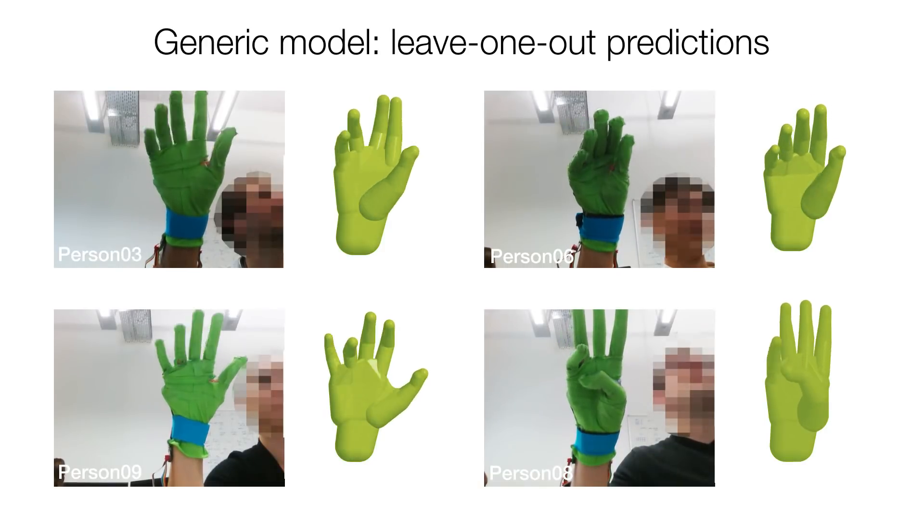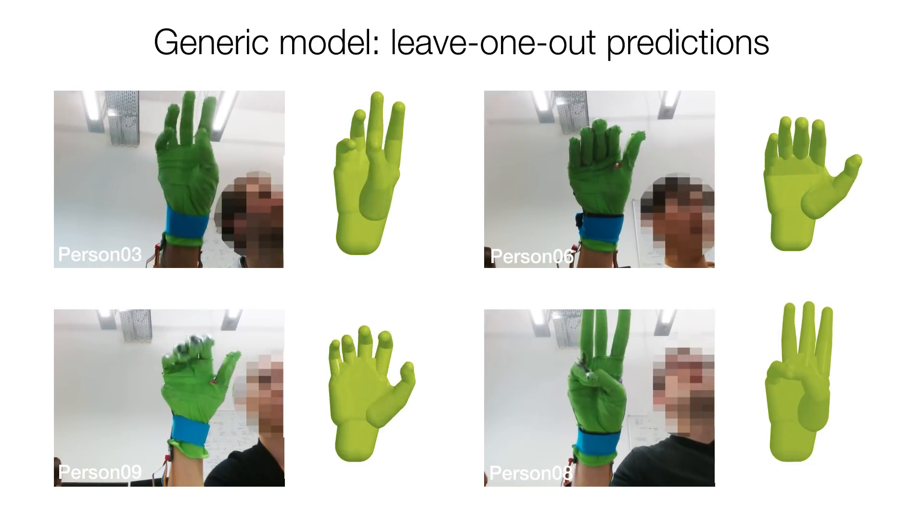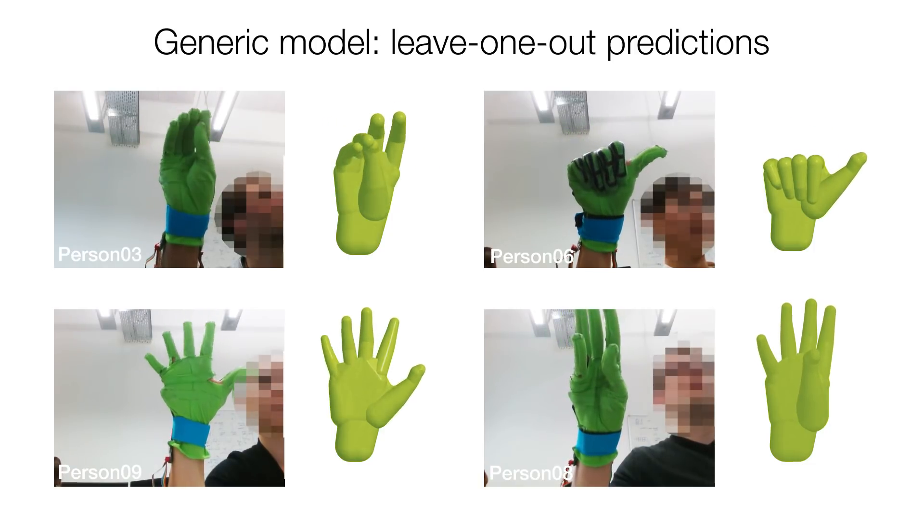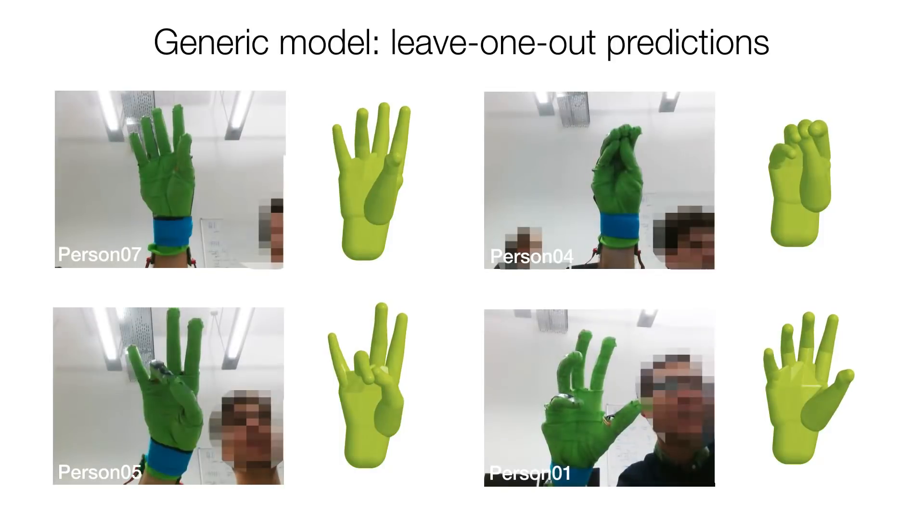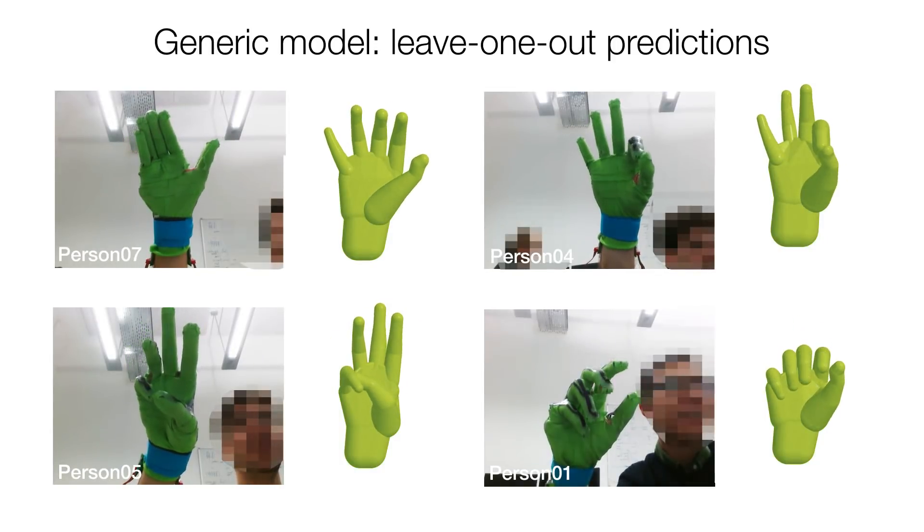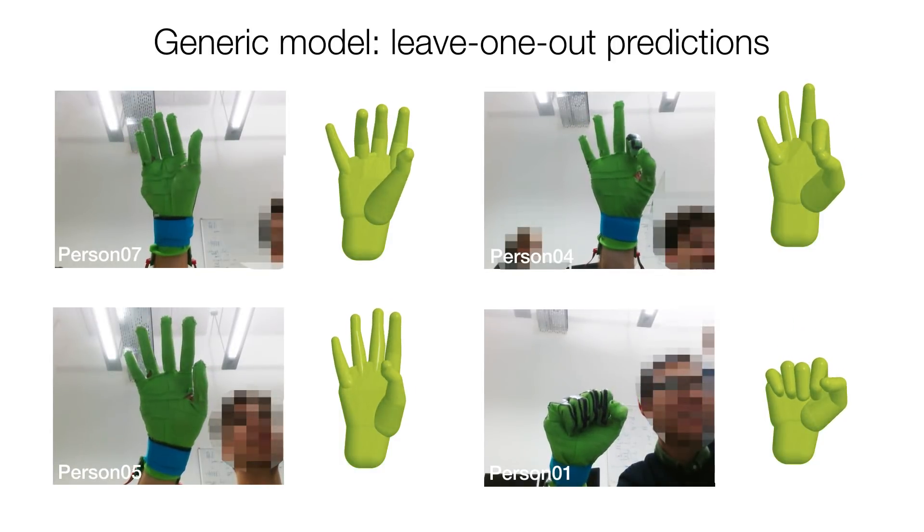In a leave-one-out experiment, we demonstrate that a non-personal, general model, trained with data from nine people and applied to the tenth person, captures quite accurate poses.